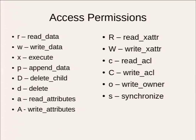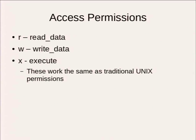These are all the various access permissions you can have in the access permission field — all the ones that apply on FreeBSD. The first three I grouped together because they map directly to your traditional Unix permissions: r, w, and x — read, write, and execute. They work the exact same as you would expect in traditional Unix permissions or POSIX ACLs.